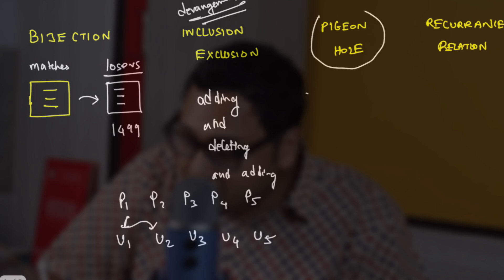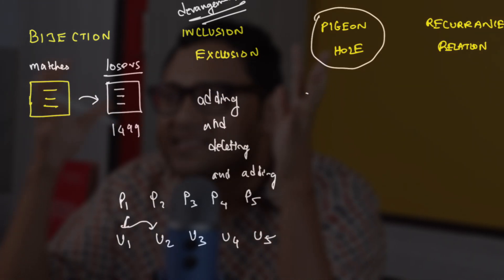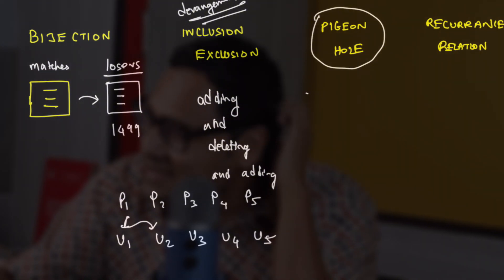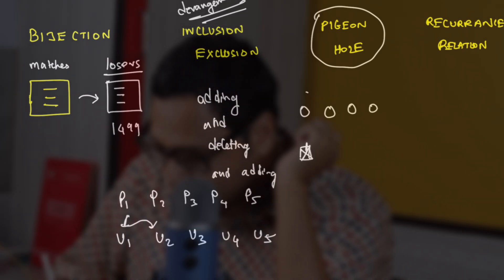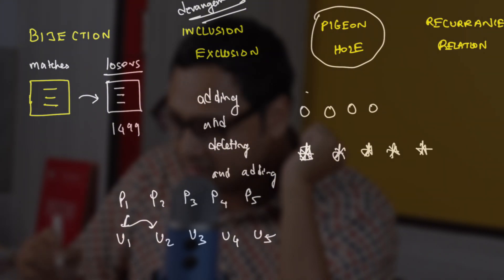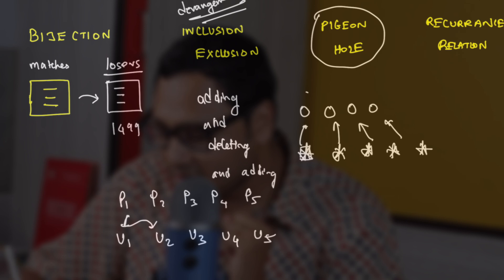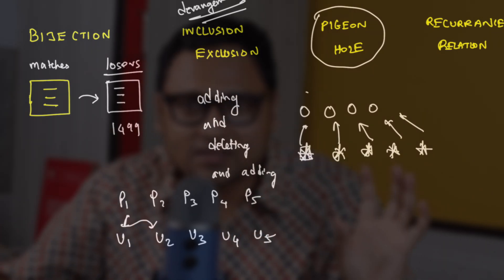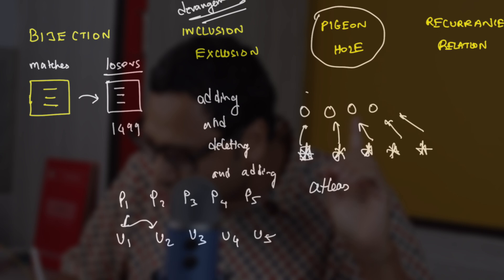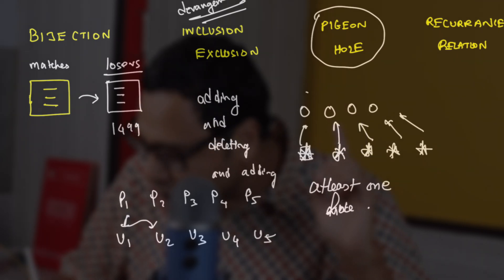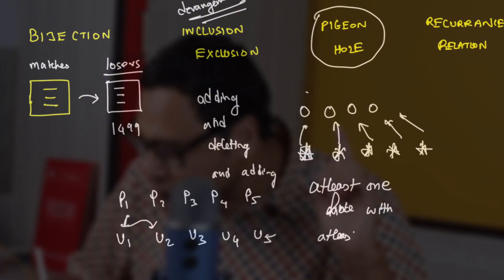The third strategy is the pigeonhole principle — very famous and standing on a very simple idea, but the problems can be really twisted. The idea is: suppose you have four holes and five stars. Since you have more stars than holes, you can conclude there is at least one hole with at least two stars. This simple principle can cause havoc — it's amazing how difficult pigeonhole problems can be.